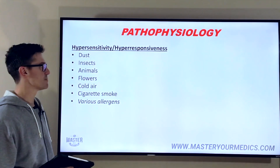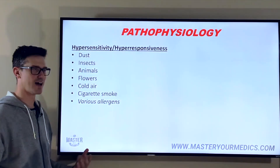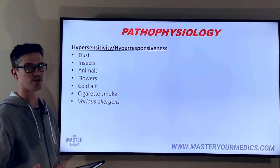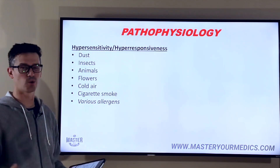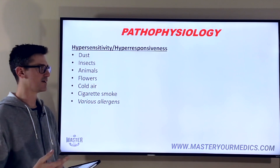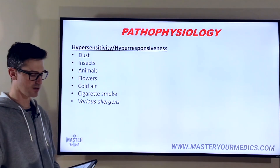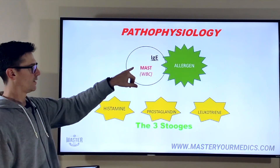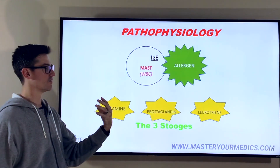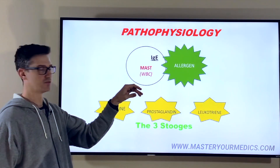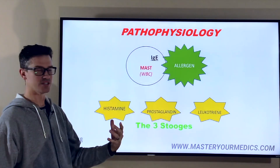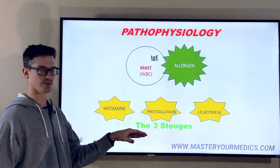Asthmatic patients have a hypersensitivity or hyper-responsiveness to some type of allergen or stimulant triggering all of this through immunological responses — whether that's dust, insects, animals, flowers, cold air, cigarette smoke, or whatever it may be. Immunoglobulin E, part of our overall immune system, binds to mast cells. When the allergen is exposed to that mast cell, it essentially pops the cell, causing it to break down, releasing a large amount of cytokines.